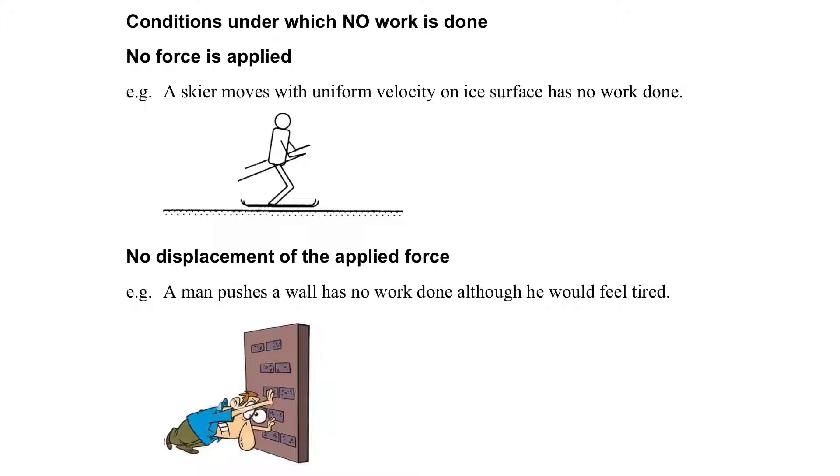No work is done for the following conditions. Firstly, when no force is applied, then there will be no work done. During uniform motion, the net force is equal to zero. So W equals Fs, then the work done is zero.